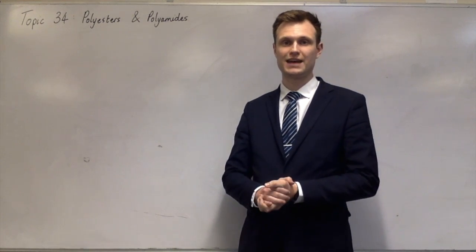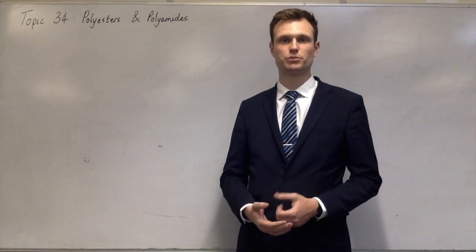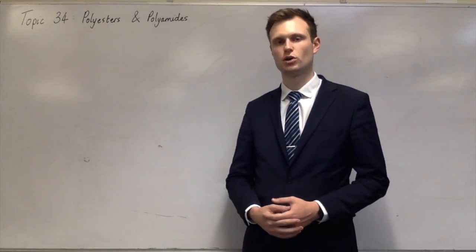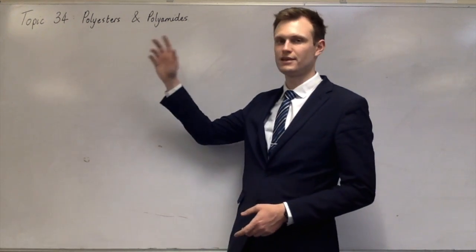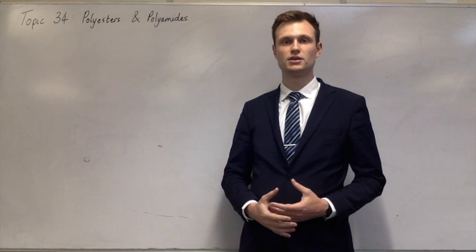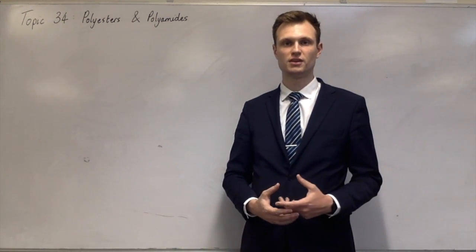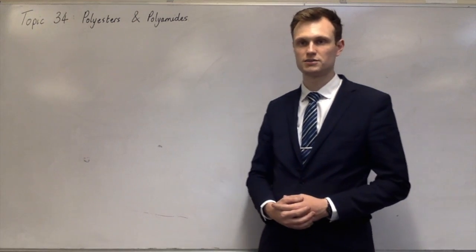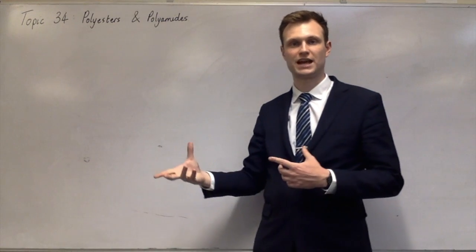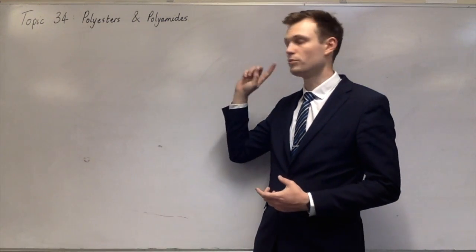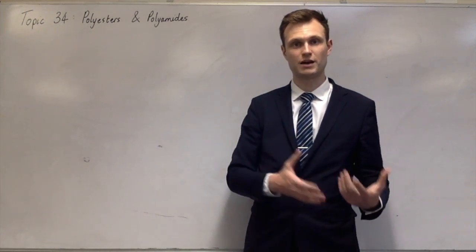Hello and welcome to this next topic of OCR A-level chemistry. This is topic 34, which is all about the condensation polymers of polyesters and polyamides. A polyester contains many ester bonds, and a polyamide contains many amide bonds. They're both types of polymers formed from carboxylic acids with alcohols to form polyesters, and carboxylic acids and amines to form polyamides.